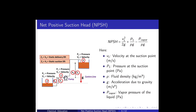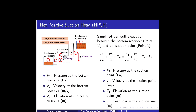Here V1 is the velocity at the suction point in meters per second. P1 is the pressure at the suction point in Pascals. ρ is the fluid density in kg/m³. g is acceleration due to gravity in m/s². Pvapor is the vapor pressure of the liquid in Pascals. Point 0.1 is the suction point where we calculate the net positive suction head.